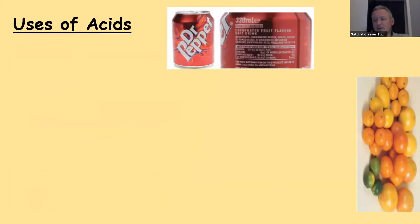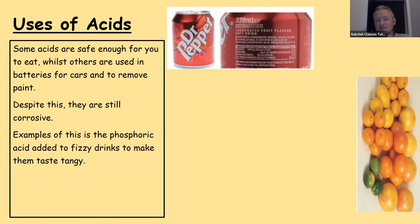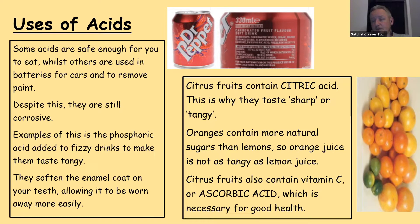Uses of acids: some acids are safe enough to eat; others are used in car batteries or to remove paint. Dr Pepper contains phosphoric acid — it's added to fizzy drinks to make them taste tangier and fruit-flavoured. It can soften the enamel on your teeth, meaning it's worn away more easily by bacteria that enjoy the sugary drinks. Citrus fruits also contain citric acid, which is why a bottle of orange juice can sometimes be just as bad as a bottle of fizzy drink — it's what makes them taste sharp or tangy.